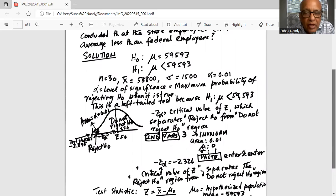This is called critical value of Z because it separates the reject H0 on the left of it from the do not reject H0 on the right of it.